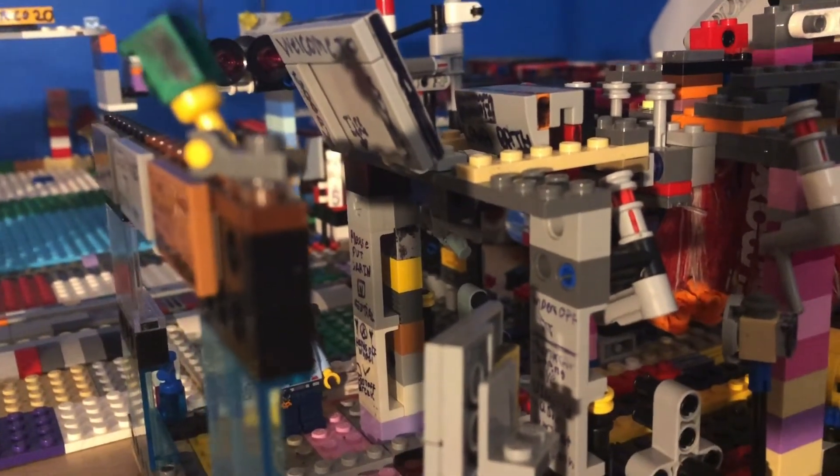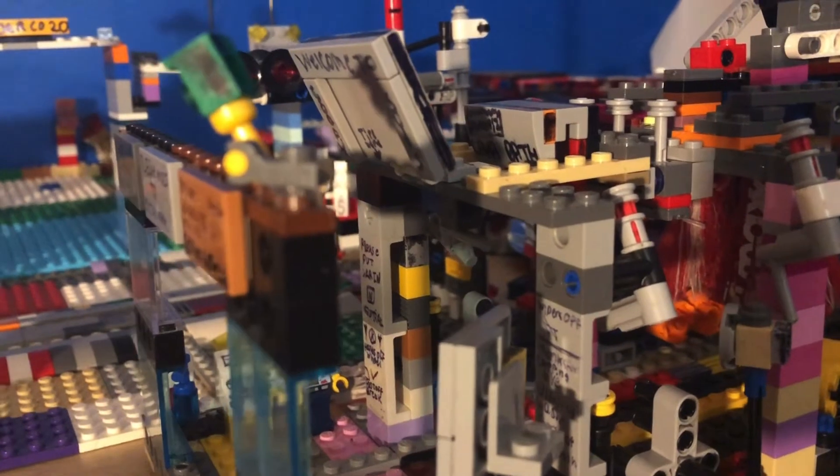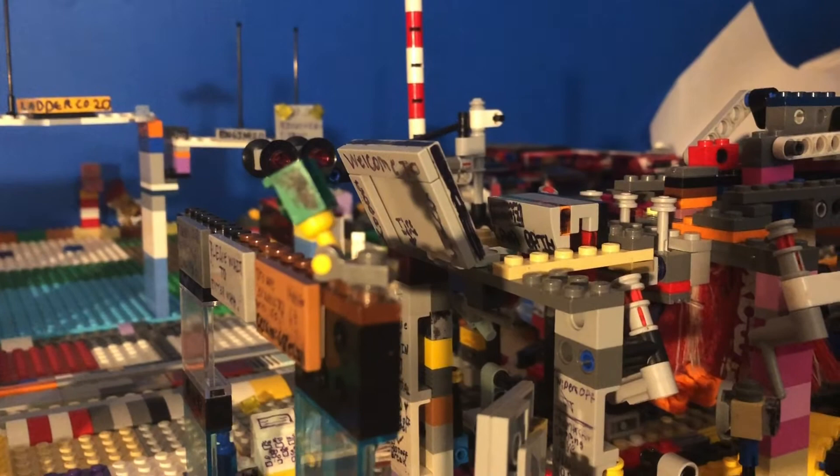And here we have a banana foamer sprayer from Sonny's, the car wash factory top sprayer for pre-soak.